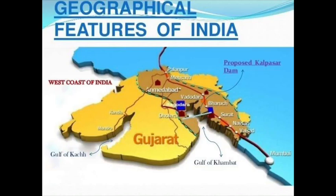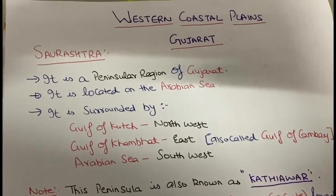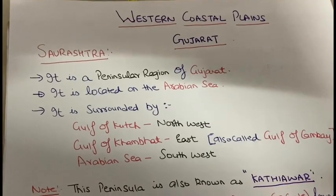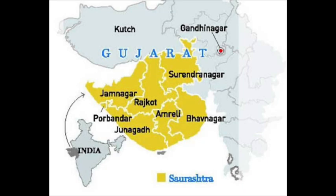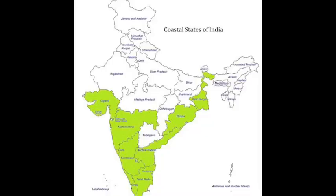Hello students! In the last lecture on coastal plains, we discussed the western coastal plains and the eastern coastal plains — their extension, what they are called in the northern and southern parts, and where they are located. Now in this part, we are going to discuss the western coastal plain, and particularly about the region called Gujarat. The coastal plain extends from Gujarat to West Bengal.